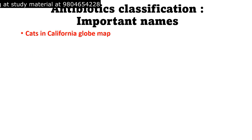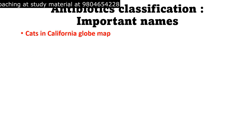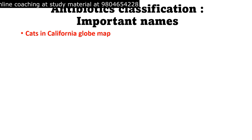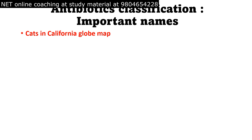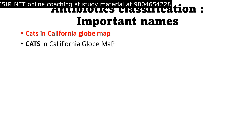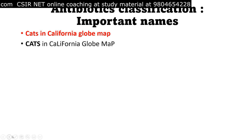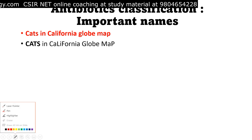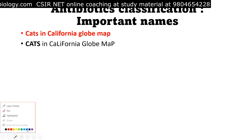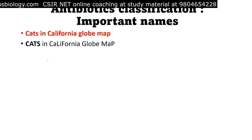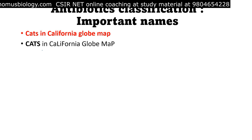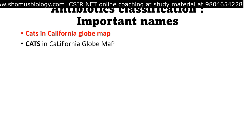Start with this idea: 'Cats in California Globe Map.' This is what you need to remember — Cats in California Globe Map. In the California map there will be cats. Once you know that, we need to break it down into fragments. You can see there are plus and minus signs and capital and small letters — there are indications for those.